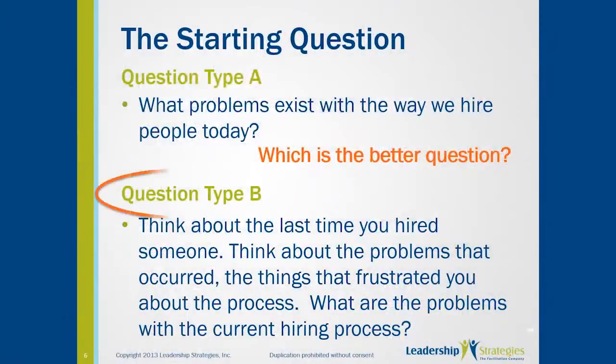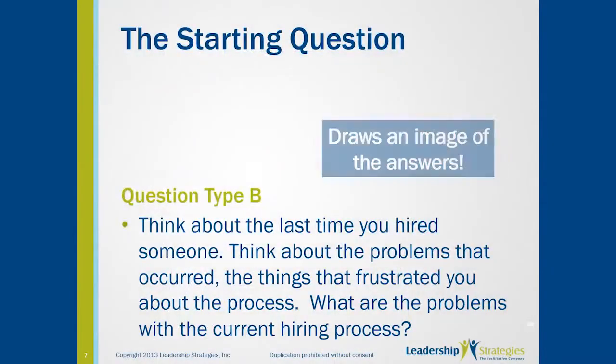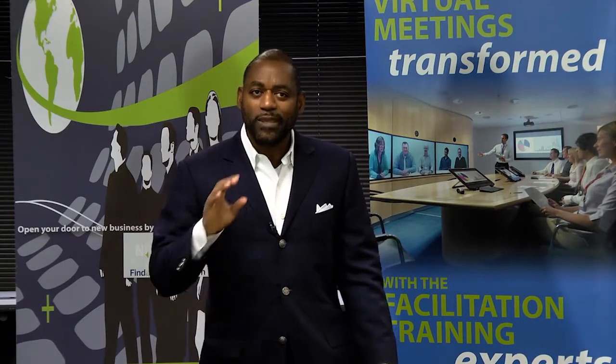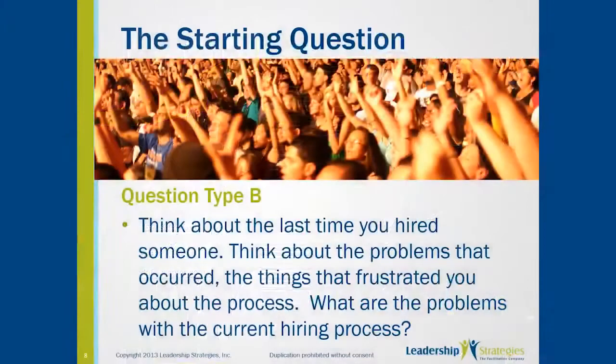Most people say Type B, but the real question is why? Why is it a better question? We think we know the answer. When you ask a Type B question, people can visualize their answers. They can see it because you put them in a situation where they could see the answers you're asking for. And when people can see their answers, they put up their hands, they're ready to answer and many people do that.